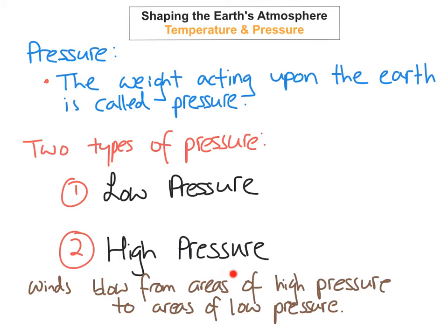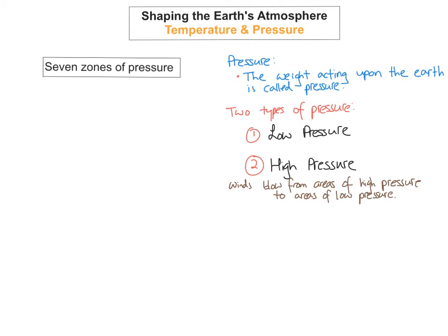Winds always blow from areas of high pressure to areas of low pressure. On the Earth, we have seven zones of pressure — three of those zones are low pressure and four zones are high pressure.